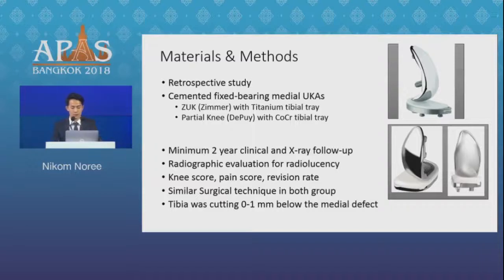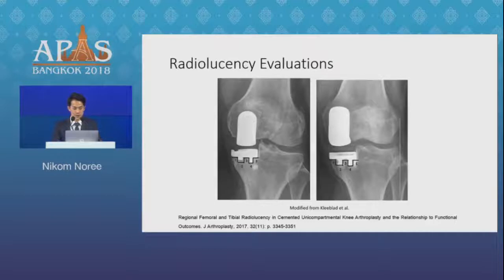The surgical techniques were similar in both groups. The tibia was cut 0 to 1 mm below the medial defects. Two radiographic views showed the findings in the AP period, referencing the previous study.